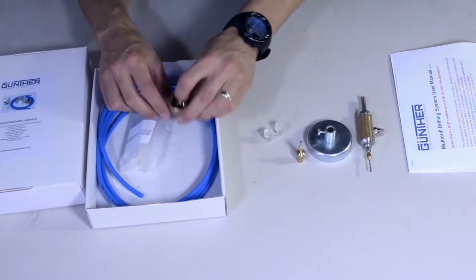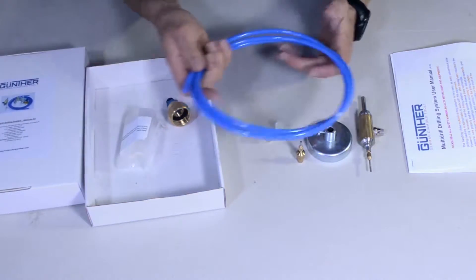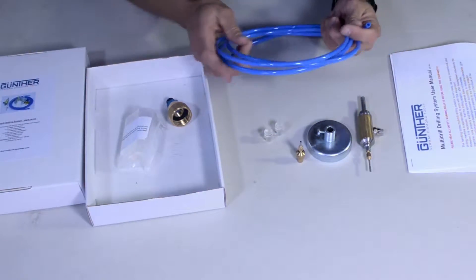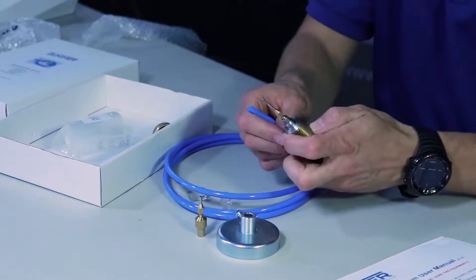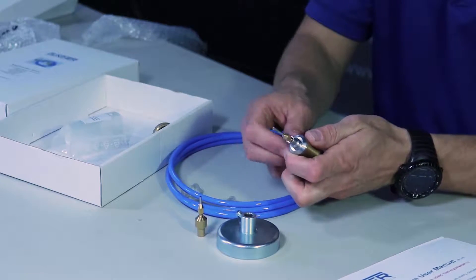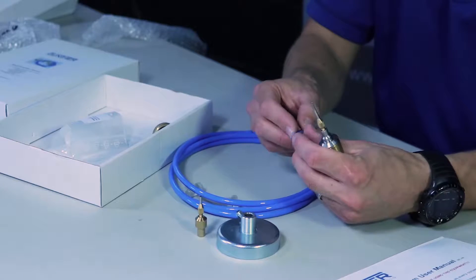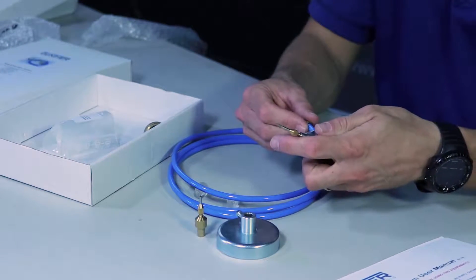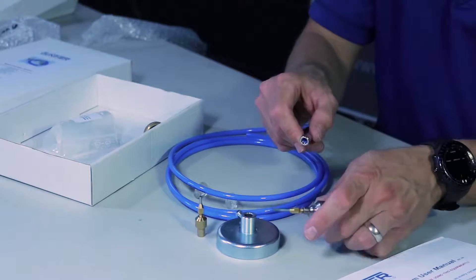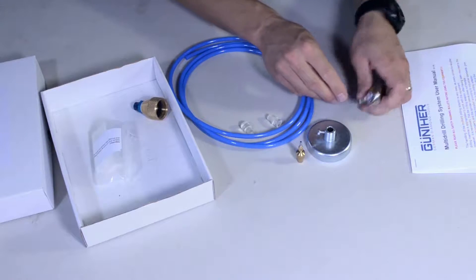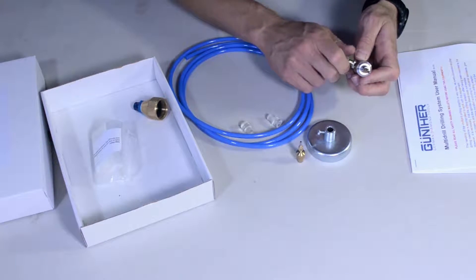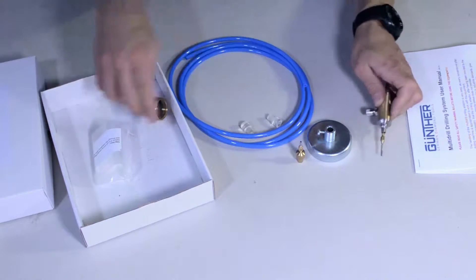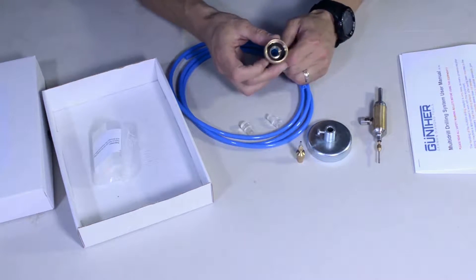This is your water hosing. This is just a compression fitting. It goes on here first and then you insert it onto here, and then you tighten it down for your hose connection.